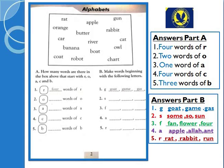Ab baccho, hum next page ki taraf padhte hain. Ek box diya hai jisme kuch words aapko given hain — udhar dekhe: rat, apple, gun, orange, rabbit, butter, car, river, cat, banana, owl, port, court, robot, chart. Is tarah ke kuch words given hain.